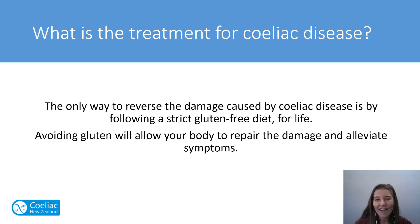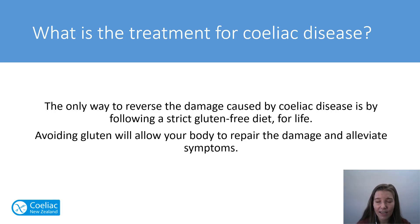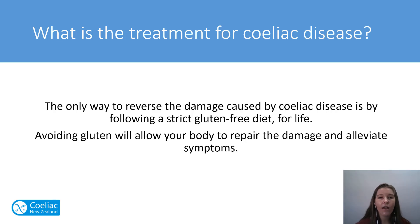The treatment for celiac disease is a strict gluten-free diet for life. The only way to reverse the damage and lift all of these problems is by avoiding gluten — and the positive side is that this condition can be completely alleviated by following a gluten-free diet. Avoiding gluten allows the body to repair the damage and alleviate symptoms. If we stop the immune system from targeting the gut, the villi will heal and start absorbing nutrients, and the inflammation widespread across the body will cool off.